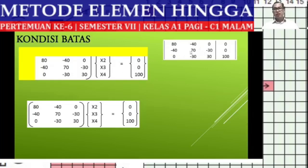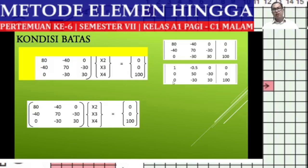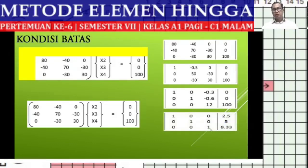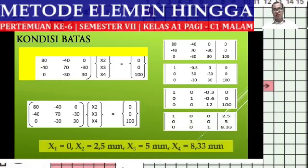I arrange it in Excel. I make baris 1 equal to 1, then eliminate column 1 of rows 2 and 3. Then in baris 2, column 2 becomes 1, and column 2 of rows 1 and 3 are eliminated. Similarly for row 3, column 3. We directly obtain the results: displacement at nodal 1 = 0, nodal 2 = 2.5 mm, nodal 3 = 5 mm, and nodal 4 = 8.33 mm.